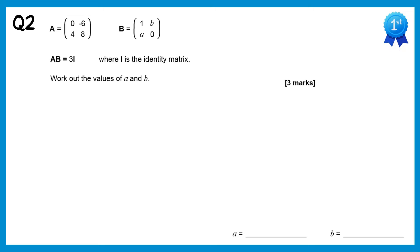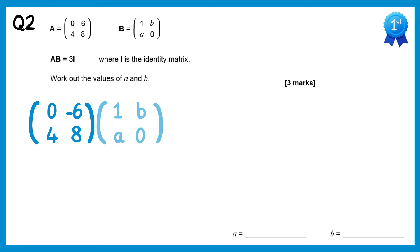In this question we're told that AB equals 3I. So let's find AB: we'll do 0, negative 6 with 1, a — that gives 0 times 1 which is 0, and negative 6 times a is negative 6a. Then 0, negative 6 with b, 0 — 0 times b is 0, and negative 6 times 0 is also 0.